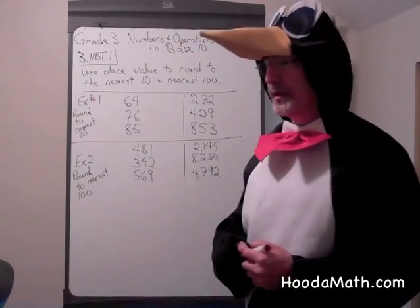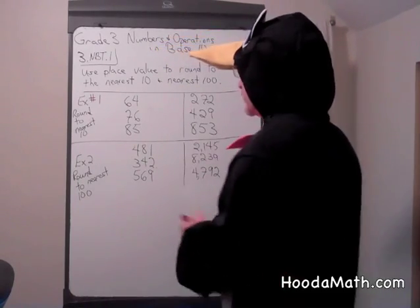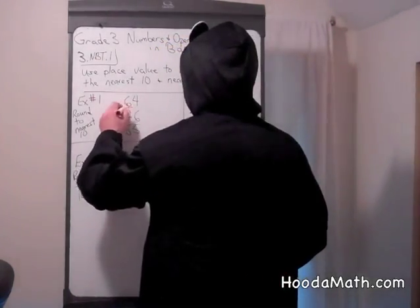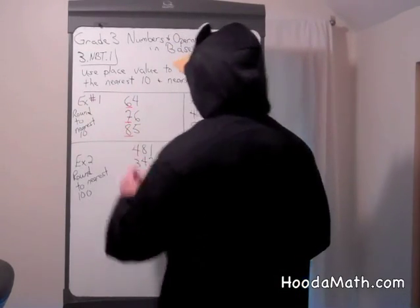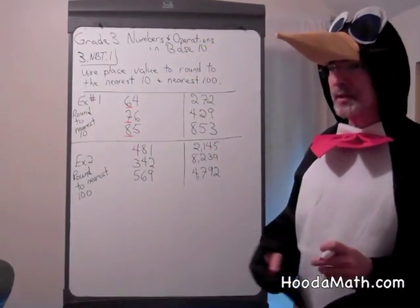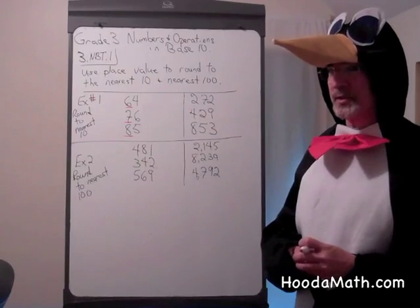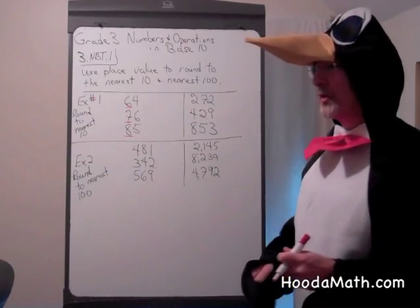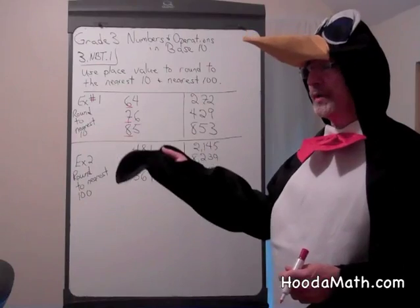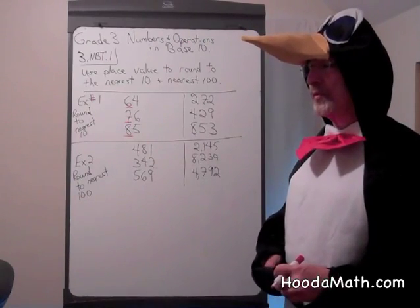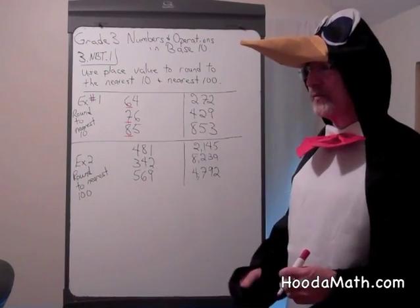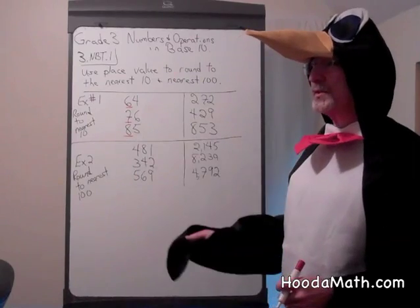First thing we have to do is identify the tens place. So I'm going to identify the tens place here, here, and here. We look to the number directly to the right of the tens place. If the number is 5 or greater, we round up one. If the number is less than 5, the number remains the same.